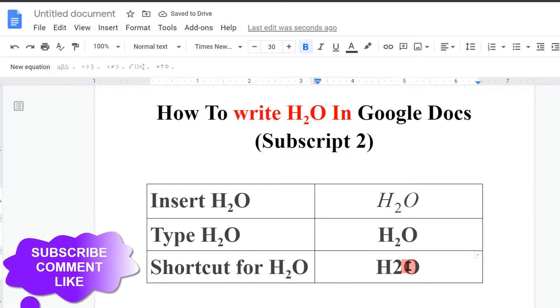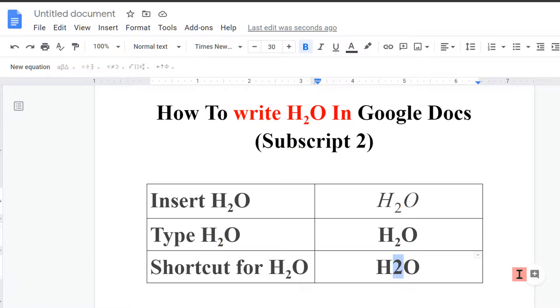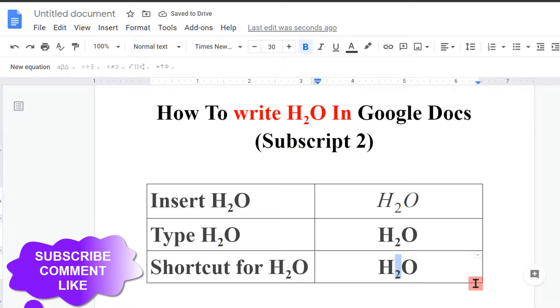Now at last, there is one shortcut. Just select 2 in H2O and press Ctrl and comma on your keyboard to subscript 2 in H2O.